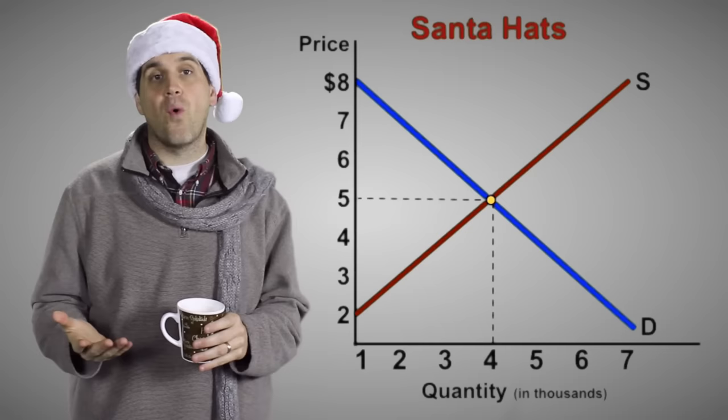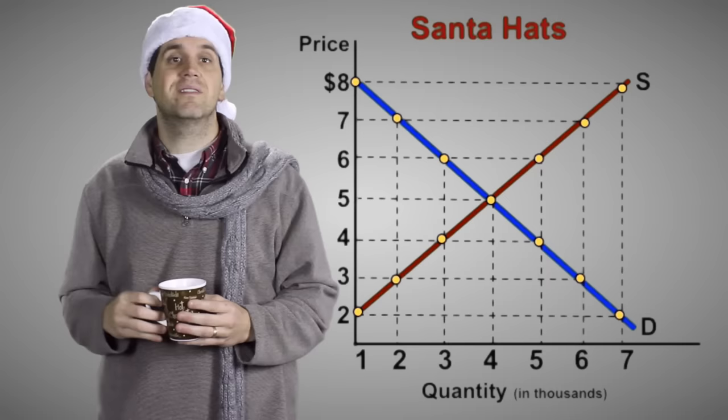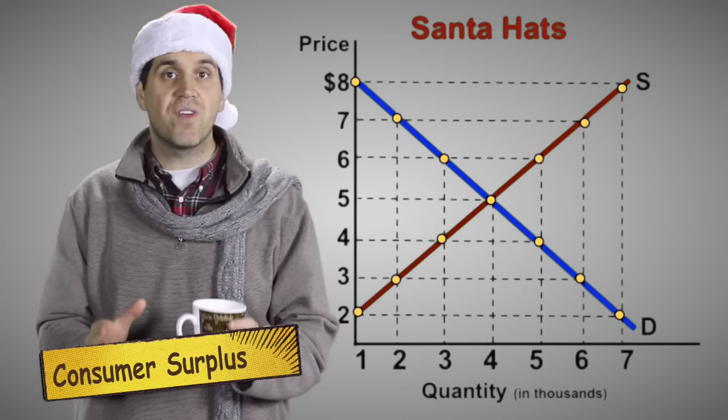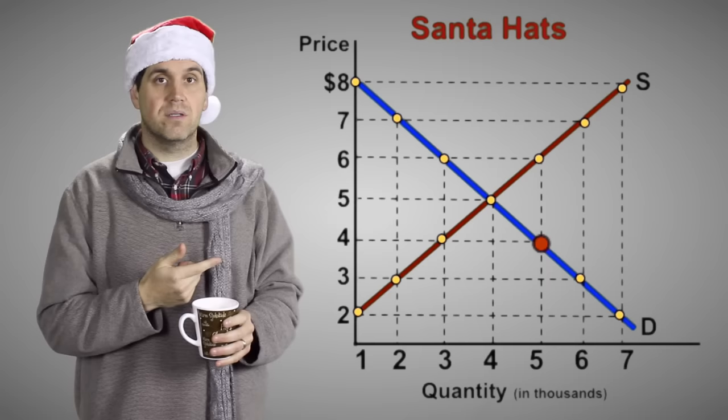The demand curve shows that someone out there is willing to pay $8. They didn't — they paid $5. That's called consumer surplus. It's the difference between what you're willing to pay for something and what you actually do pay. The area of combined consumer surplus is this triangle right here. But what about the person who's willing to pay only $4? Well, they don't get it — they don't value hats enough.